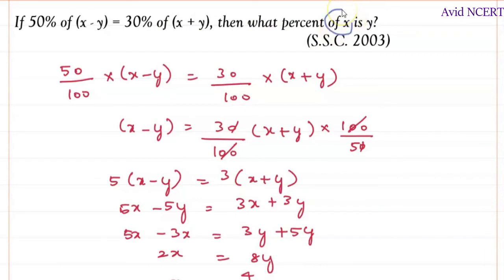So whichever is like this, of x, then x goes down, which is y by x times 100. In case if it is what percent of y is x, then it will be x by y times 100.